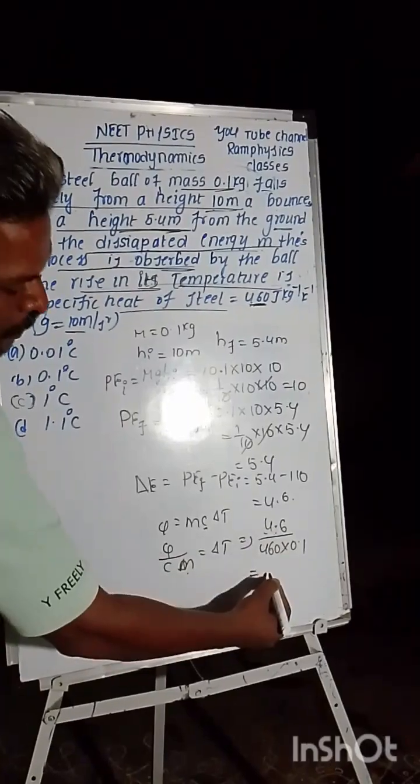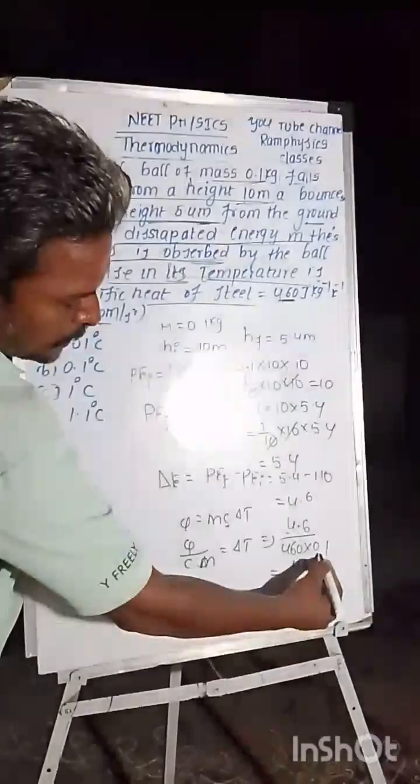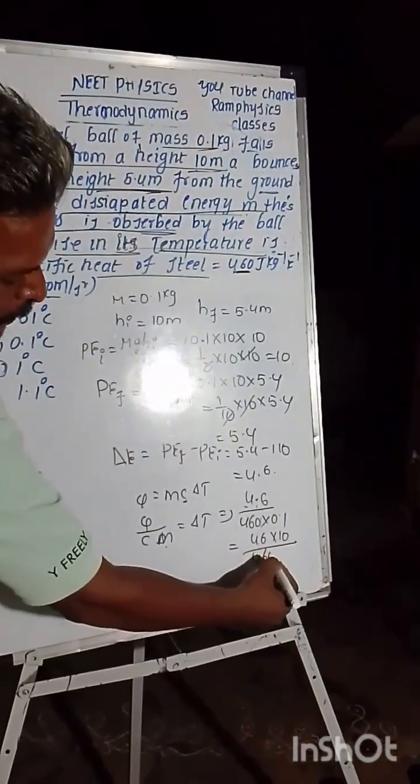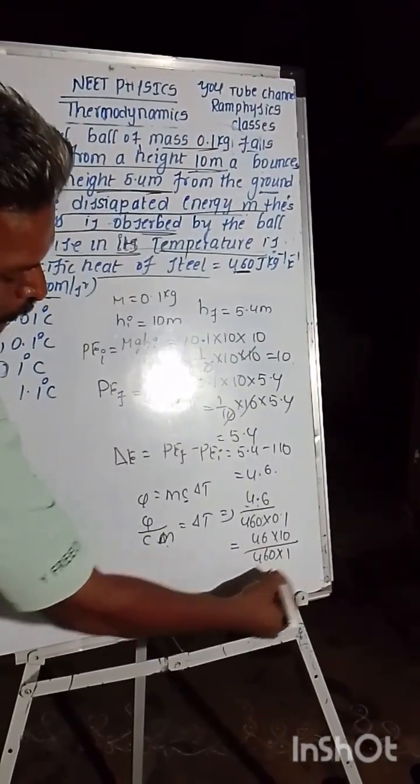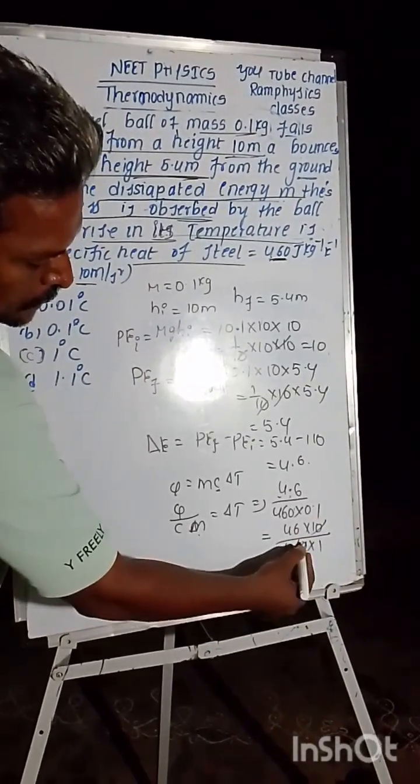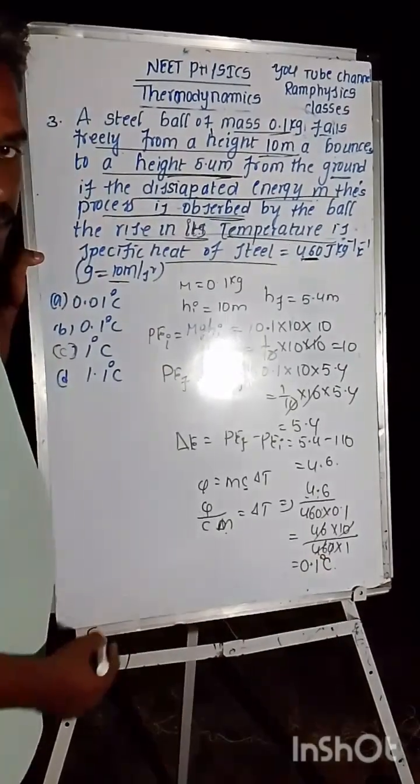So we will be solving this one. Here 4.6, it is 1/10, that is equal to 460 into 1. So cancelling terms, 0 cancel, this 1 time cancel, we are getting 0.1 degrees Celsius.